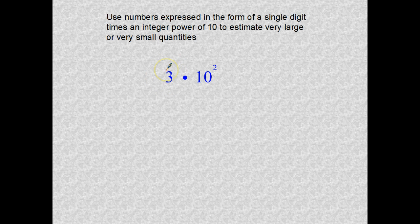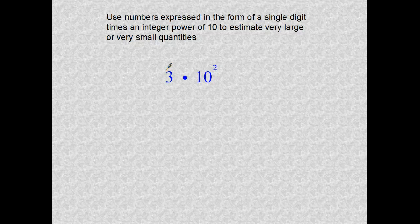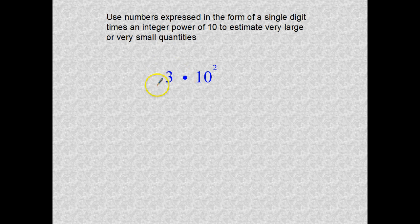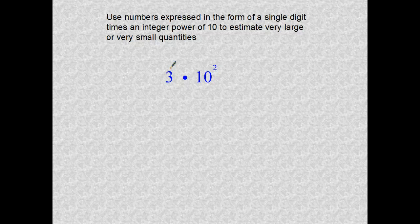The coefficient 3 is going to be positive for our purposes. If we look at 3 times 10 to the second, we know 10 to the second is 100, so we're estimating this as 100 times the coefficient. 100 multiplied by 3 equals 300 — and we are estimating that to be a very large number, since 300 is definitely greater than one.